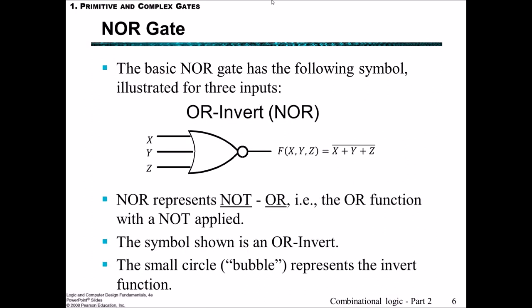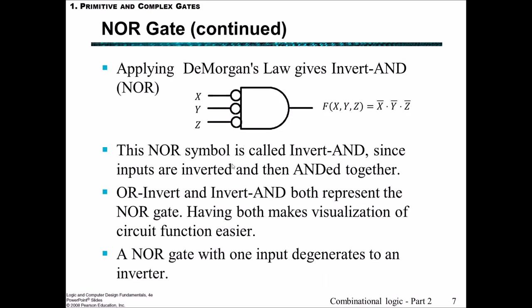This is a NOR gate illustrated by the following symbol, and the NOR function is that we have X OR Y OR Z all inverted. Previously for the NAND gate we had Invert-OR, that is invert and then the OR. Here we have an OR-invert, OR first and then invert afterwards. That is NOT OR, and once again this little bubble on the end represents the invert function. Once again we can apply DeMorgan's law and that gives us an INVERT-AND which is also a NOR, and that is where each of the inputs is first inverted and then they're ANDed together. So NOT X AND NOT Y AND NOT Z. As before with the NAND gate, we have here an OR-invert and an INVERT-AND both representing a NOR gate. It can sometimes make the circuit function easier to visualize when we have both of these.